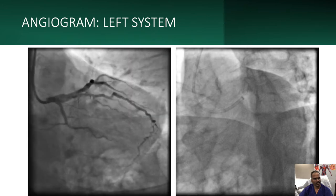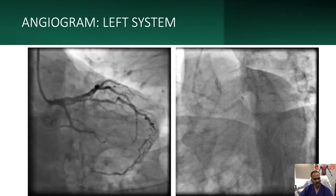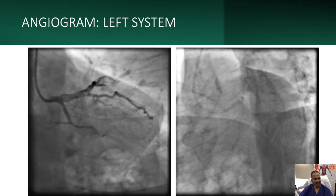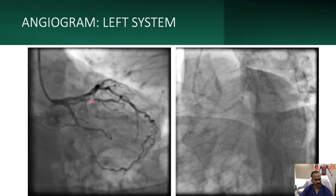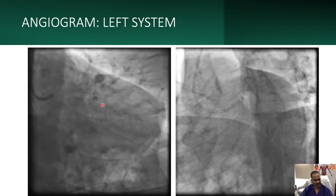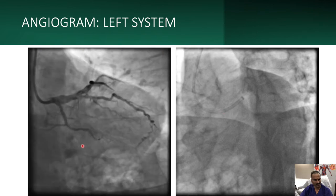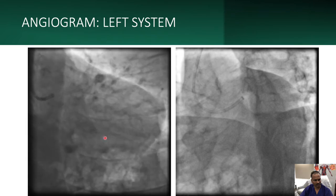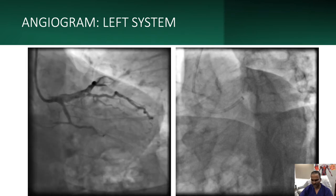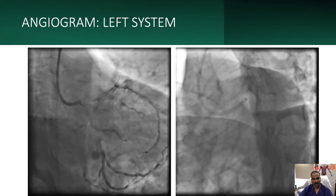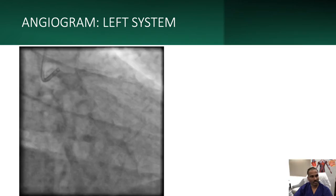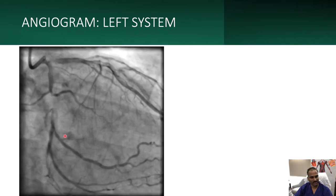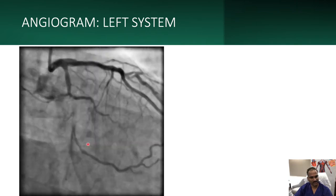This is the angiogram of the left system during the last attempted CTO PCI. You can see a patent stent in LAD and patent stent in Ramus, but there is disease in the mid-stent in Ramus and there is a total occlusion in LCX without a clear proximal cap location. The same is seen here in a low caudal view. The distal vessel is quite good and it's a big territory — in fact, it is a left dominant system.